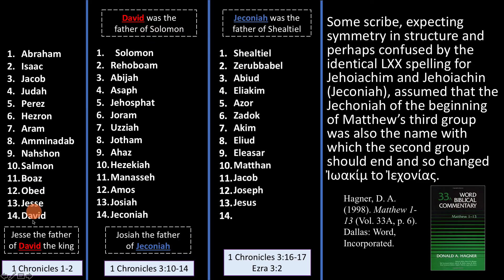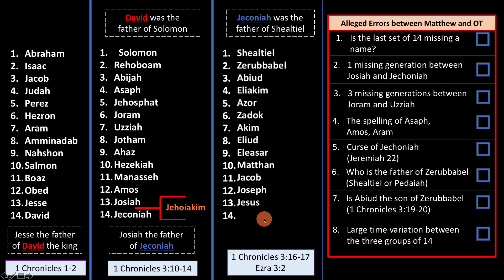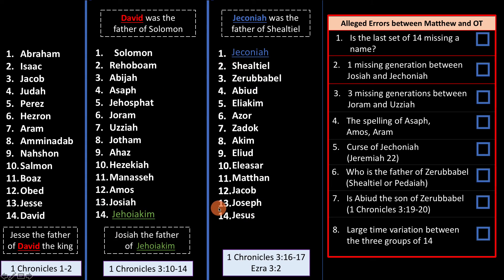Yes, the genealogy is now symmetrical — you've got David here and here, and Jeconiah here and here. But the symmetry came at the cost of an error. That's why if you open your Bible today, it has this error. But Hagner convincingly argues that error did not always exist. If we take Hagner's explanation, everything resolves perfectly. I'm very convinced by this argument. So I'm not going to say these first two issues are errors at all — I think they can be perfectly resolved. Big tick.